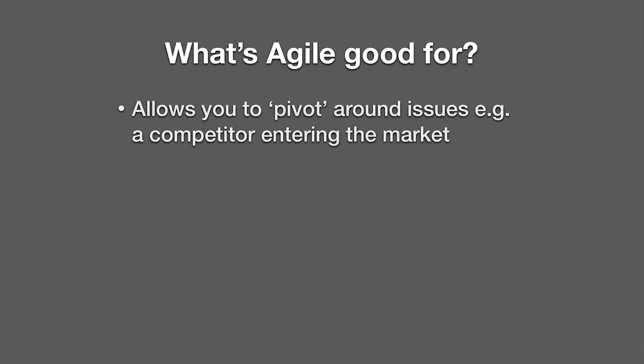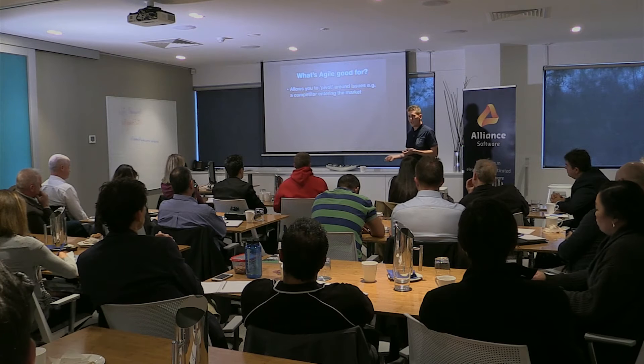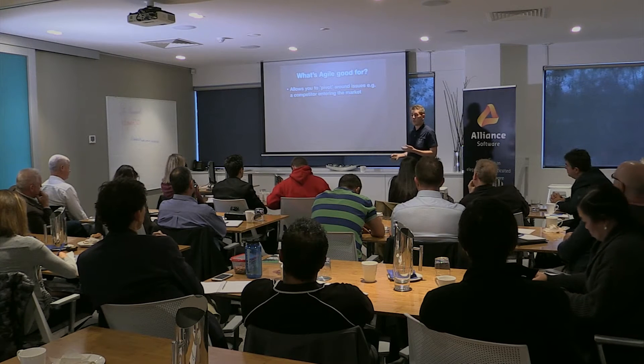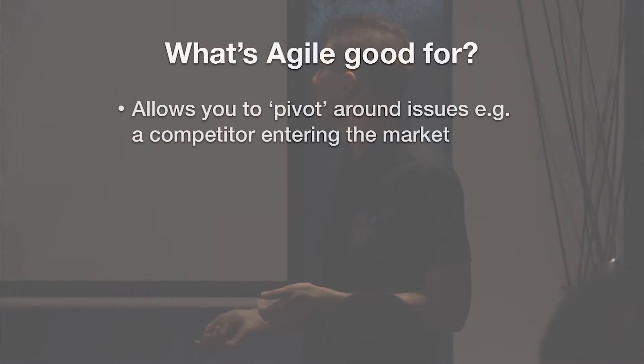What is Agile good for? Agile allows you to pivot around issues. Take the example of a competitor entering the market. Under Agile, you will typically be doing frequent releases of smaller parts of your software. It actually allows you to make a change. If you put something out and it doesn't get much take-up, you can make a change and potentially reinvent the entire product — as with the example of Email Samurai becoming Content Samurai. We thought it was going to go one way, but we built it in an Agile fashion and the end result was drastically different from what we envisaged originally.